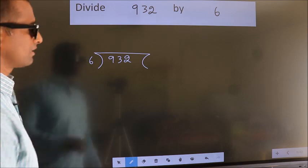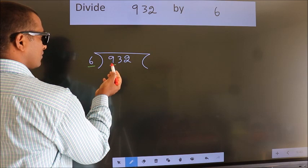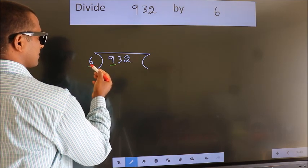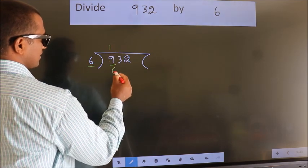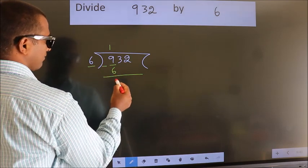Here we have 9, here 6. A number close to 9 in the 6 table is 6 times 1, which is 6. Now we should subtract. We get 3.